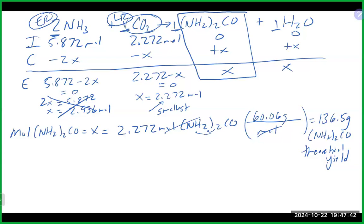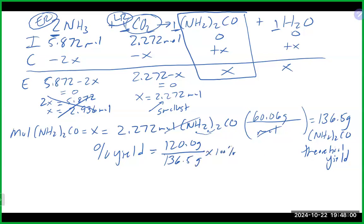Now we calculate percent yield: actual (120 g) divided by theoretical (136.5 g) times 100% gives about 87.9% — still not too bad. To summarize: you know it's a limiting reagent problem when you can get moles of each reactant. Actual yield is typically given; theoretical you calculate via stoichiometry or limiting reagent.